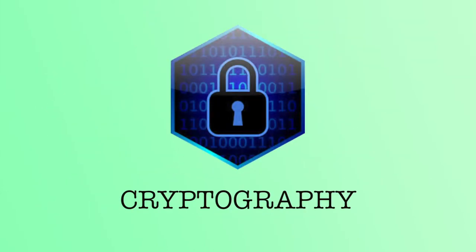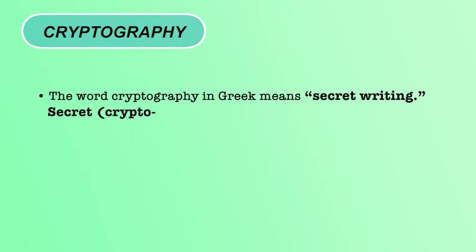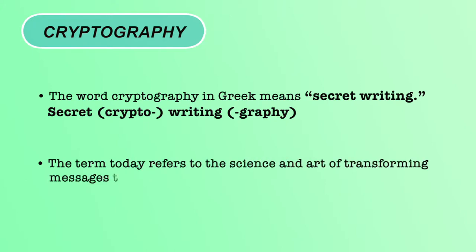The first section of this module is cryptography. Basically, cryptography is a combination of two Greek words: crypto, which means secret, and graphi, which means writing — that is, secret writing which cannot be understood by the attacker. In another term, it is an art and science of transforming messages from sender to receiver in order to make them secure and immune to attacks. Converting the original message to non-readable form and back again is collectively called cryptography.